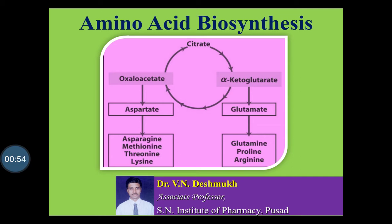Those they can synthesize are called as the non-essential amino acids, and those which are not synthesized are called as the essential amino acids — they have to depend on the plants for these amino acids. In the case of the biosynthesis of amino acids, nitrogen enters these pathways by the way of glutamate and glutamine.